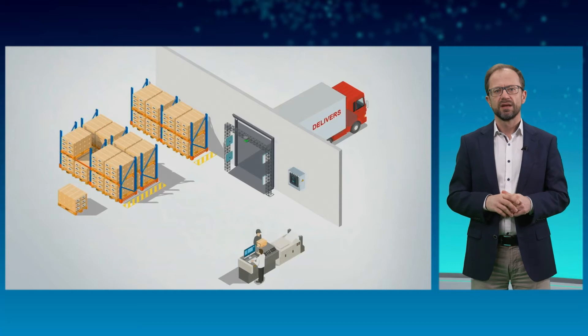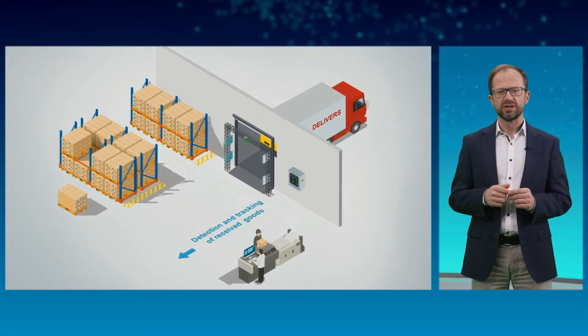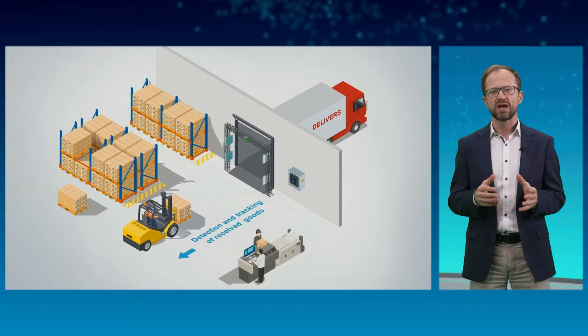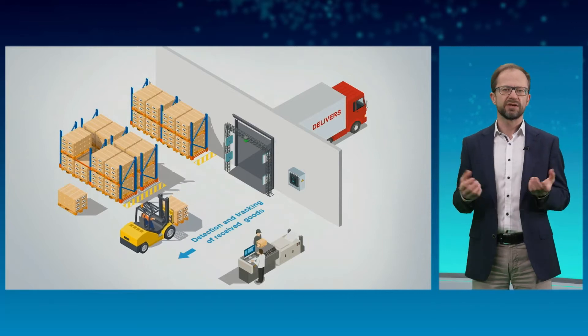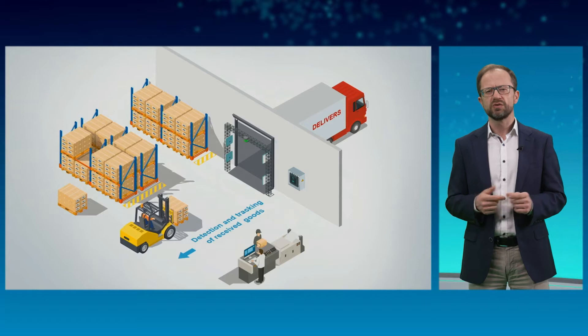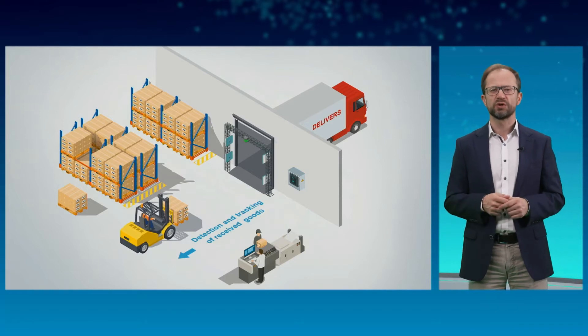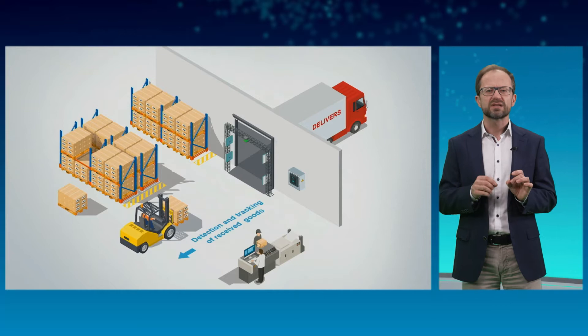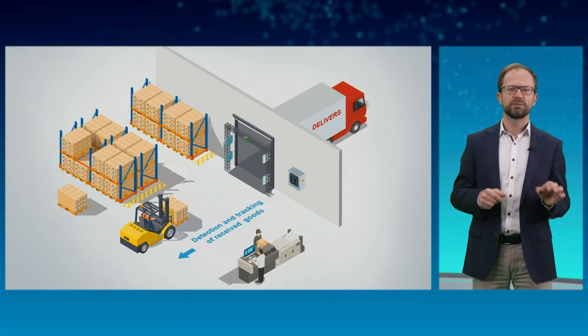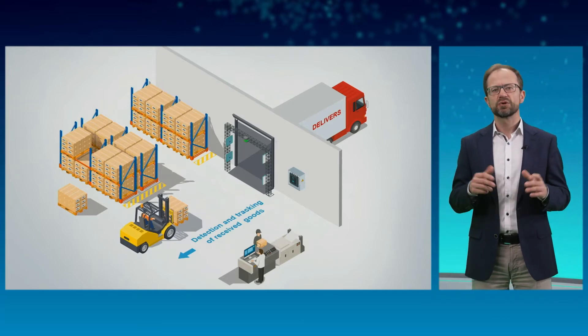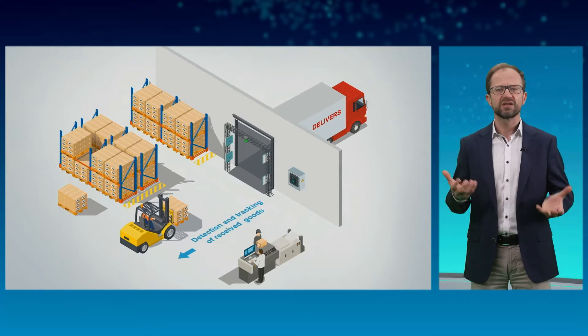I would like to show you how this works and what huge potential lies in the digital production file. Let's start with the delivery of materials. Defective components jeopardize the production process, quality, and delivery capability. Often they are not noticed at the inspection of incoming goods and may only be discovered at the final check of the produced item. Production stops and lengthy troubleshooting are the result.